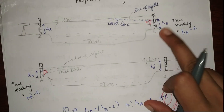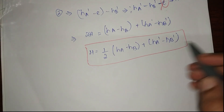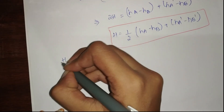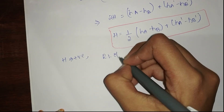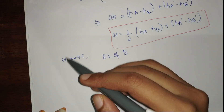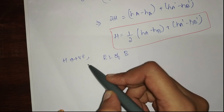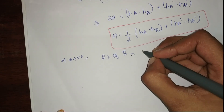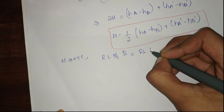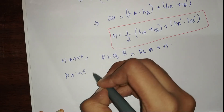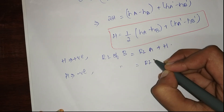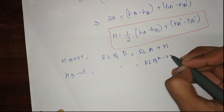Now I need to find the RL of B. First we substitute all the values and get h. Here is a small trick to save time: if h is positive then the RL of B is going to be RL of A plus h. If h is negative then RL of B is equal to RL of A minus h. This will save you lots of time in the exam.